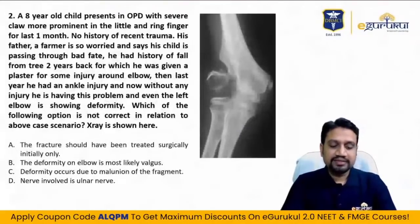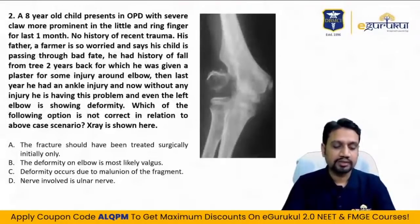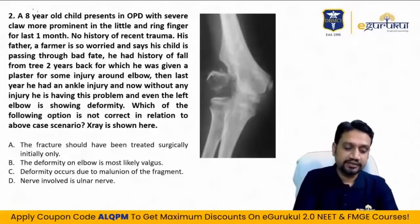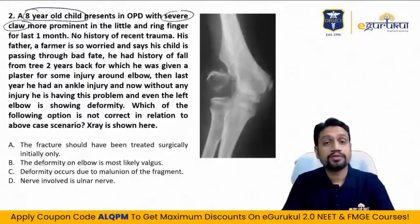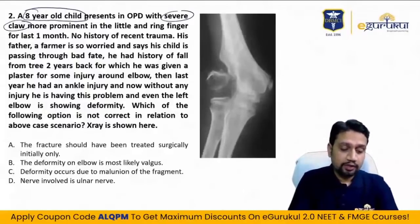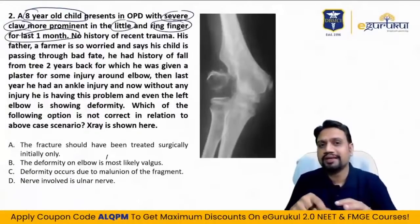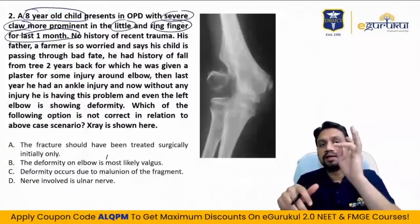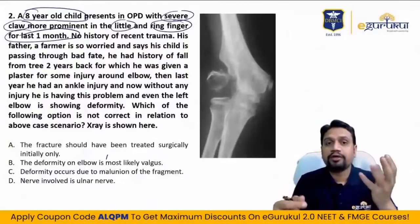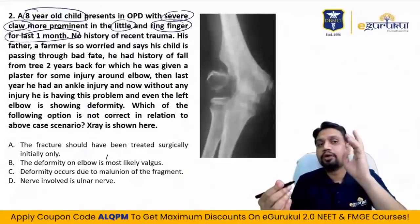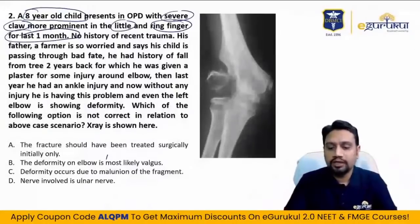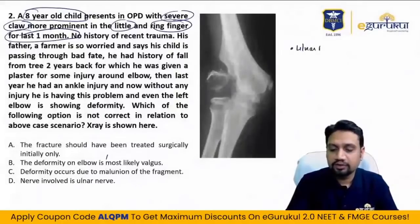Second question: an 8-year-old child presents with severe claw, more prominent in the little and ring fingers, for the last one month. Age: 8 years, skeletally immature, having claw. Claw is because of nerve involvement. Little and ring fingers are involved — from the first two lines I know ulnar nerve is involved.